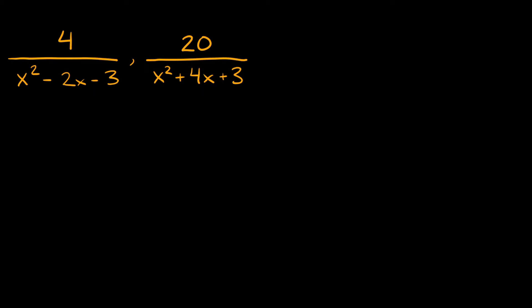Let's start with x squared minus 2x minus 3. It's a quadratic with a leading coefficient of one, so we can break it into two sets of parentheses with an x in each. To figure out the numbers, look at the last number: negative 3. What two numbers multiply to negative 3 and add up to negative 2? That would be negative 3 and positive 1, because negative 3 times 1 is negative 3, and negative 3 plus 1 is negative 2. So we get (x minus 3)(x plus 1).